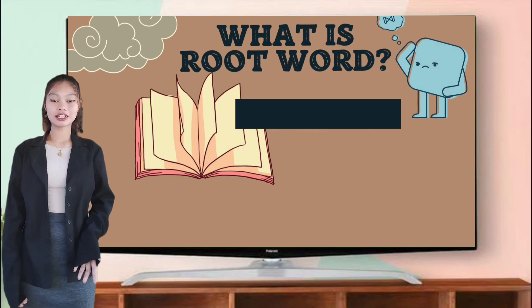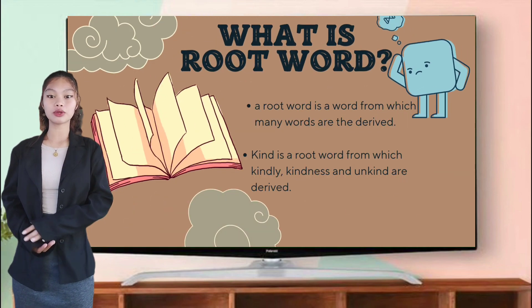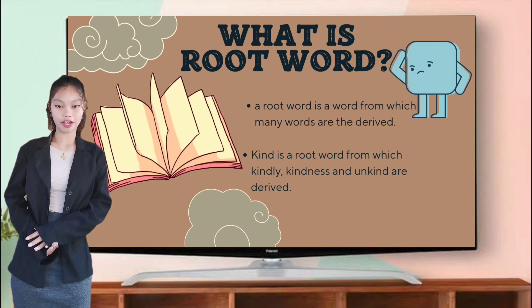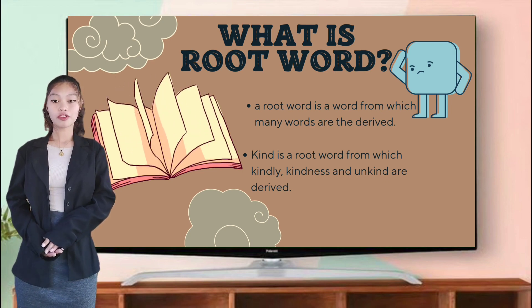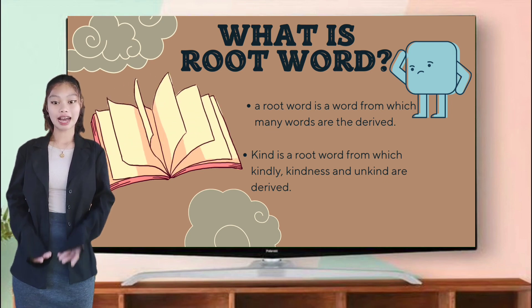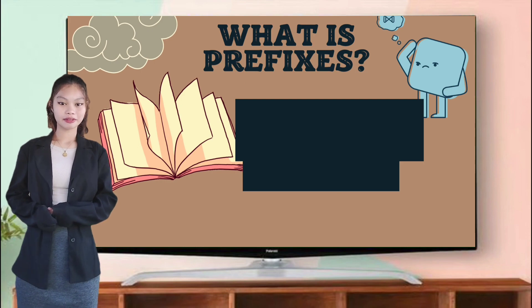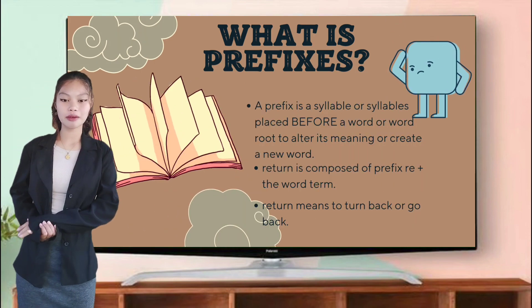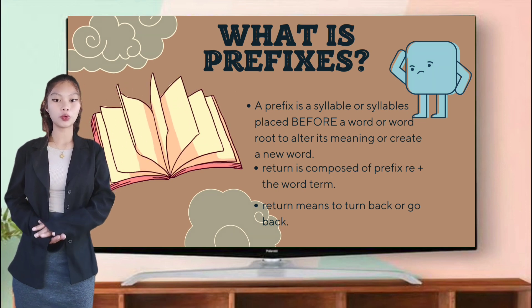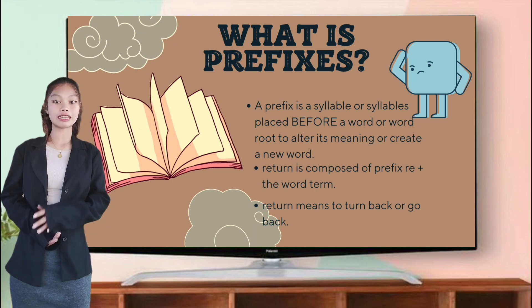So what is a root word, class? A root word is a word from which many words are derived. For example, 'kind' is a root word from which 'kindly,' 'kindness,' and 'unkind' are derived. Excellent. So how about prefix? A prefix is a syllable or syllables placed before a word or a word root to alter its meaning or create a new word.